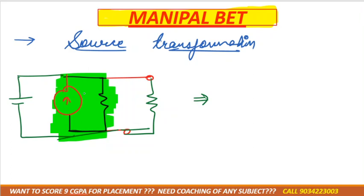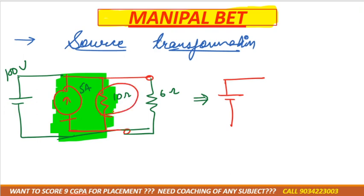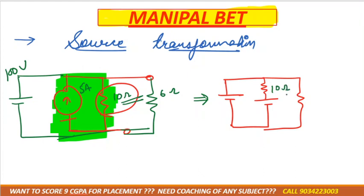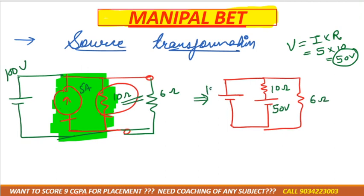For example: 5 ampere, 10 ohm, 6 ohm, and 100 volt. The 100 volt stays as is. The current source is converted to a voltage source: the resistance in parallel with the current source (10 ohm) becomes in series with the voltage source. The voltage is V = I × R = 5 × 10 = 50 volts. The 6 ohm remains as is, and the 100 volt remains as is.